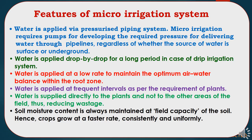Features of Micro-Irrigation system: Water is applied by a pressurized piping system. Micro-Irrigation requires pumps for developing the required pressure for delivering water through pipelines, regardless of whether the source of water is surface or underground. Water is applied drop by drop for a long period in case of drip irrigation. Water is applied at a low rate to maintain optimum air and water balance within the root zone, and at frequent intervals as per the requirement of plants. Water is supplied directly to the plants, reducing wastage, and soil moisture content is maintained at field capacity, so crop growth will be faster, consistent, and uniform.